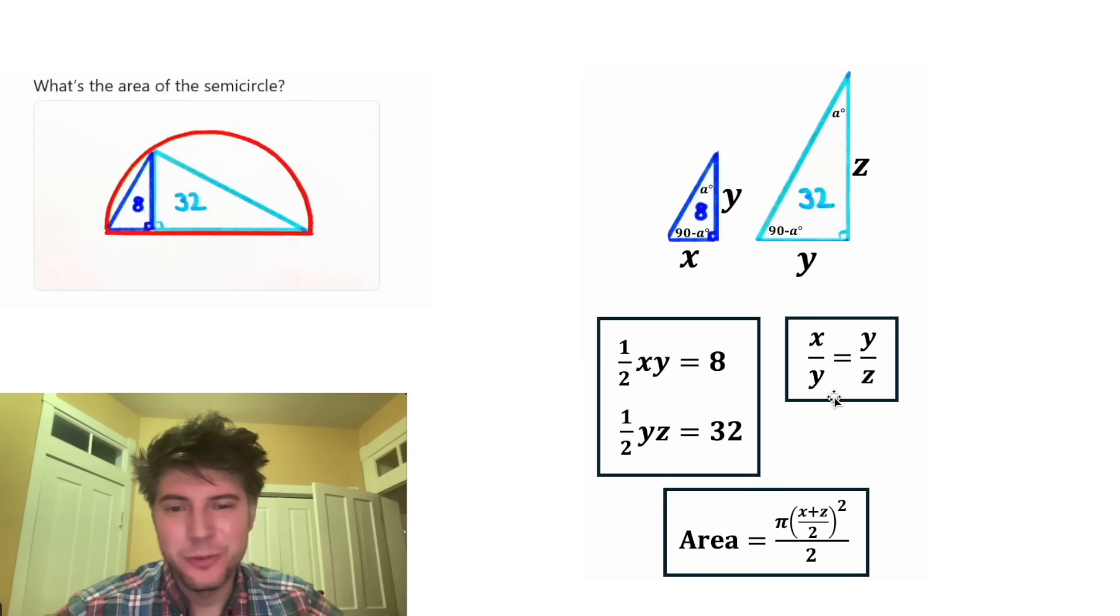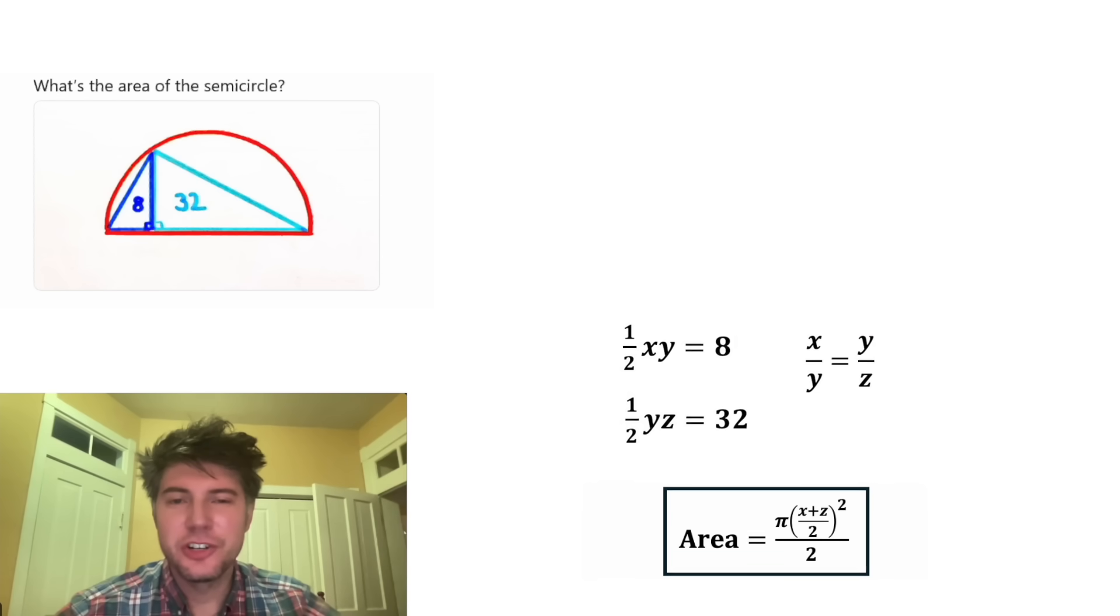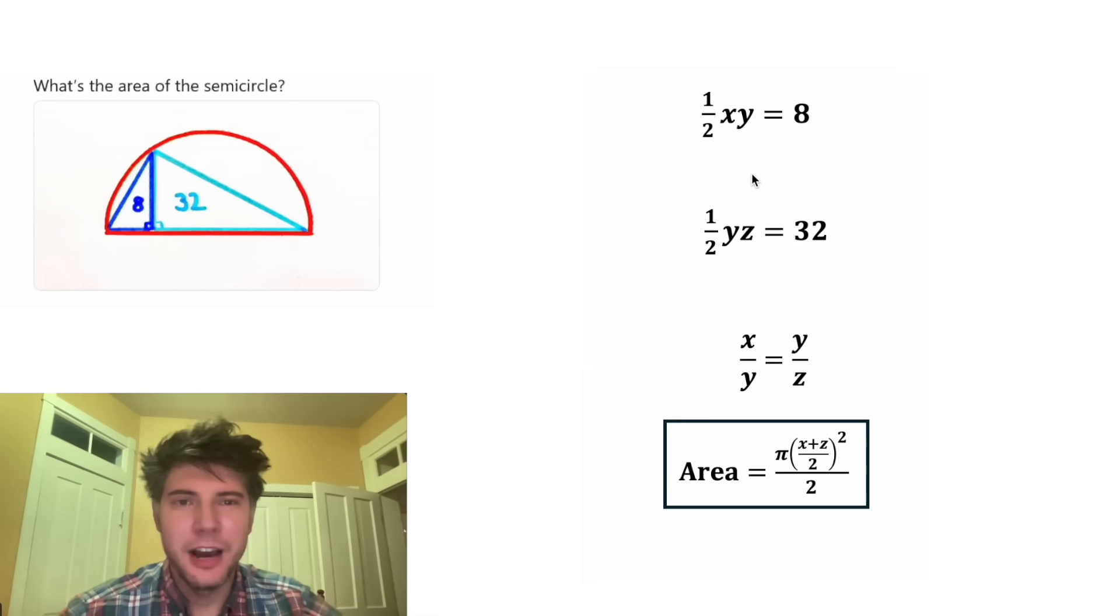I'm kind of excited about this. We have three equations and three variables. I don't think we need to look at the triangles anymore. We've just turned this into an algebra problem. I don't really like fractions. So to get rid of this fraction, let's multiply both sides by two. Same thing for this equation. Let's multiply both sides by two. And then down here to get rid of the fractions, we've got to multiply both sides by YZ.